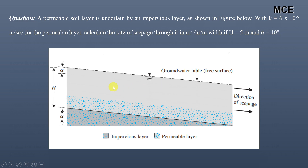You can see the figure for this problem. The groundwater table is shown in gray. Below it is a permeable layer, and below that is an impervious layer. We have to find the rate of seepage through this permeable layer, where the angle of inclination is α.